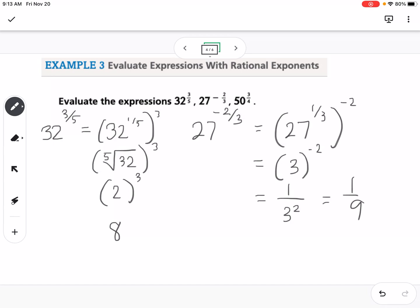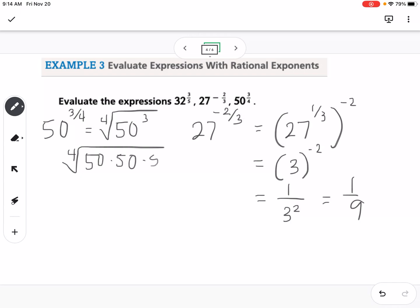And then our last one here, I'm running out of room, I'll erase the first one. So I have 50 to the 3 fourths. So if I think about it, if I look at the denominator of our fractional exponent, I think there's no fourth root of 50, so I'm going to do this one like the previous problem, so I'm going to say this would be the fourth root of 50 to the third, which means this would be the fourth root of 50 times 50 times 50. 50 I know is 5 and 10, 5 and 10, 5 and 10, 10 is 5 and 2, 5 and 2, and 5 and 2.